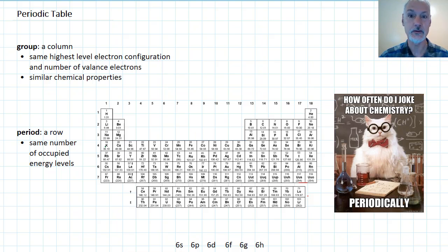The columns we refer to as groups, and there's 18 columns as you can see as you go across the periodic table. The rows, or periods, there's seven of them that run on the left side of the periodic table.